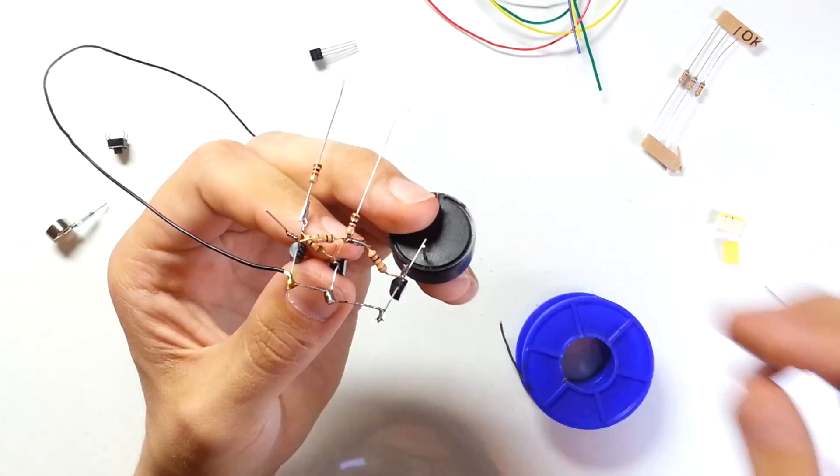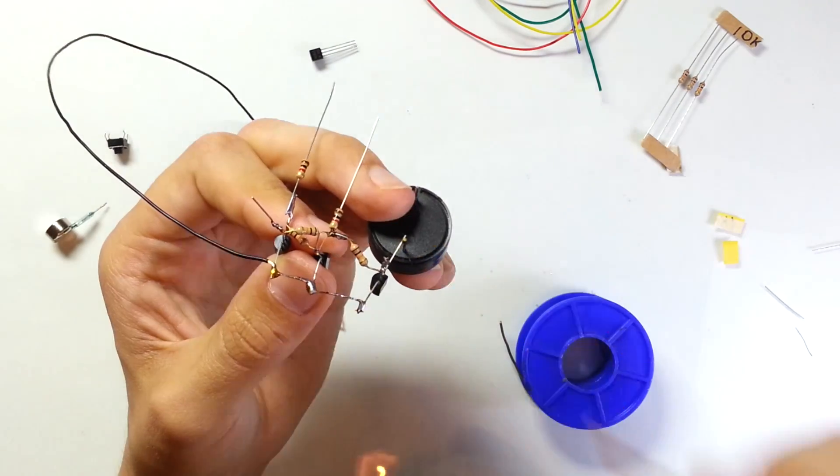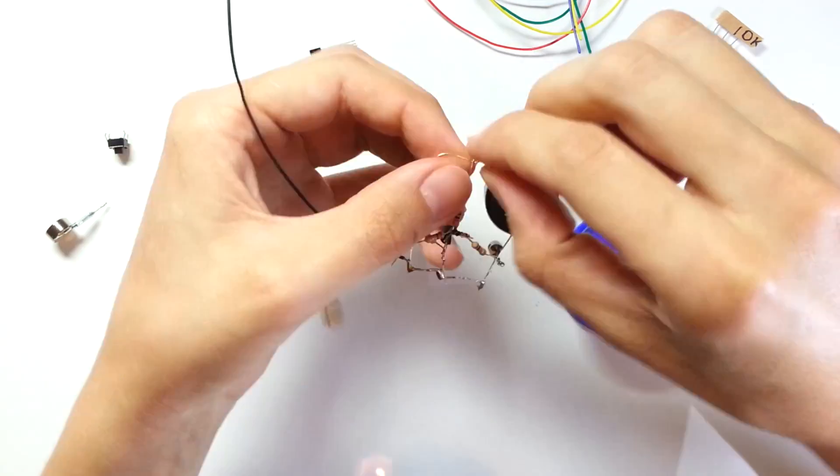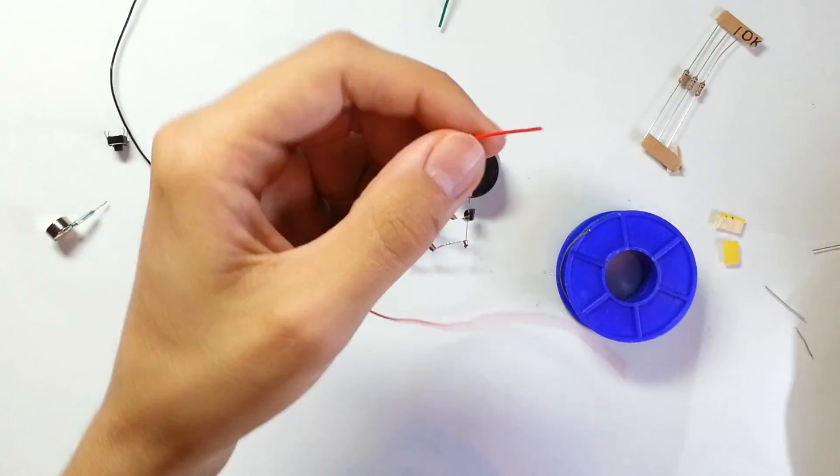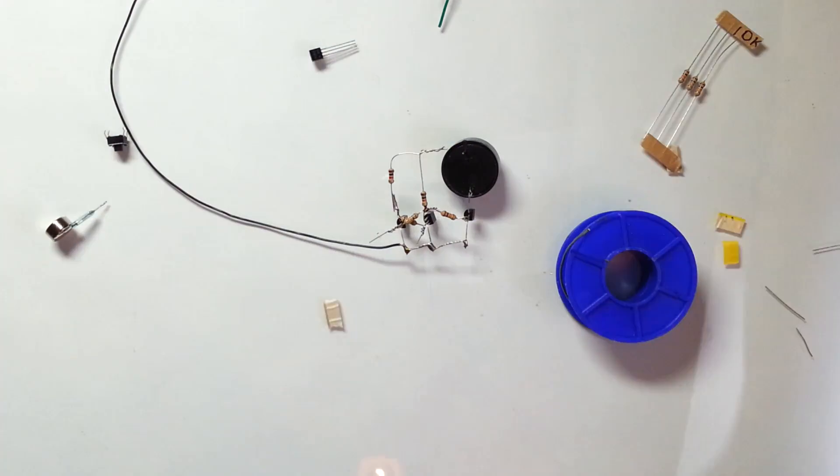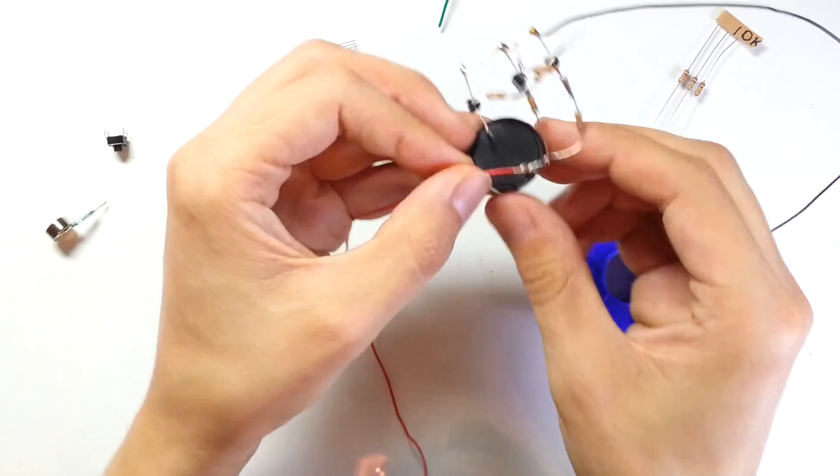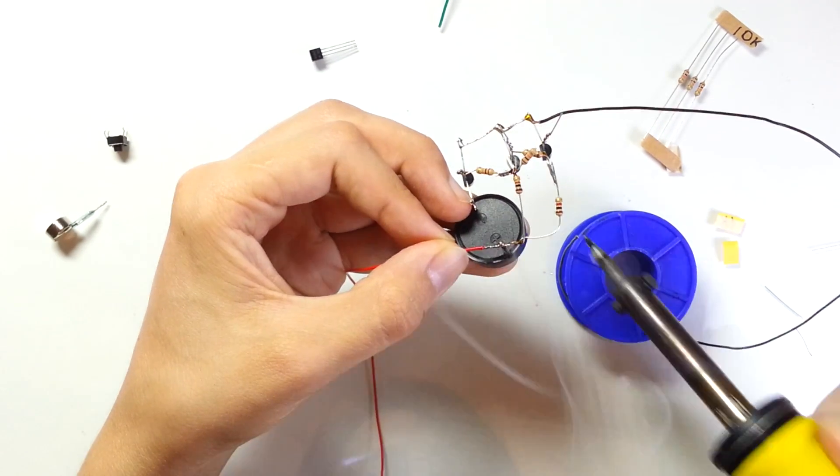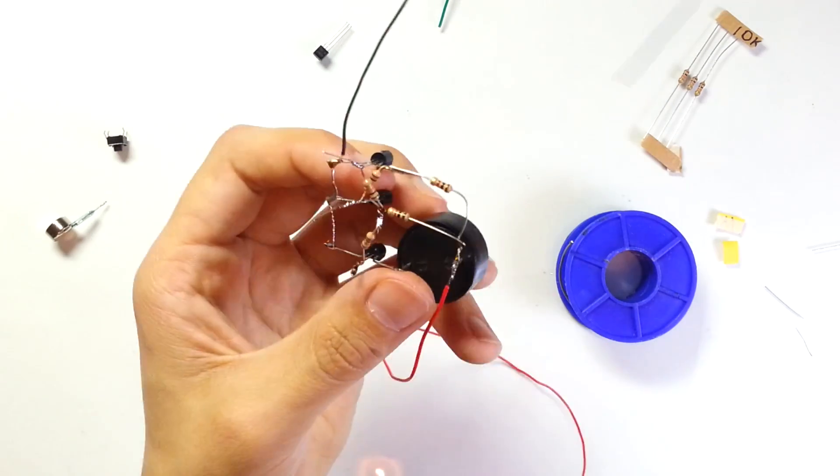Now we can solder the buzzer. Let's solder the minus lead of the buzzer to the collector lead of transistor Q4. This part of the circuit is almost ready. Now let's solder the red wire to the plus lead of the buzzer and to the 1 kOhm resistors.